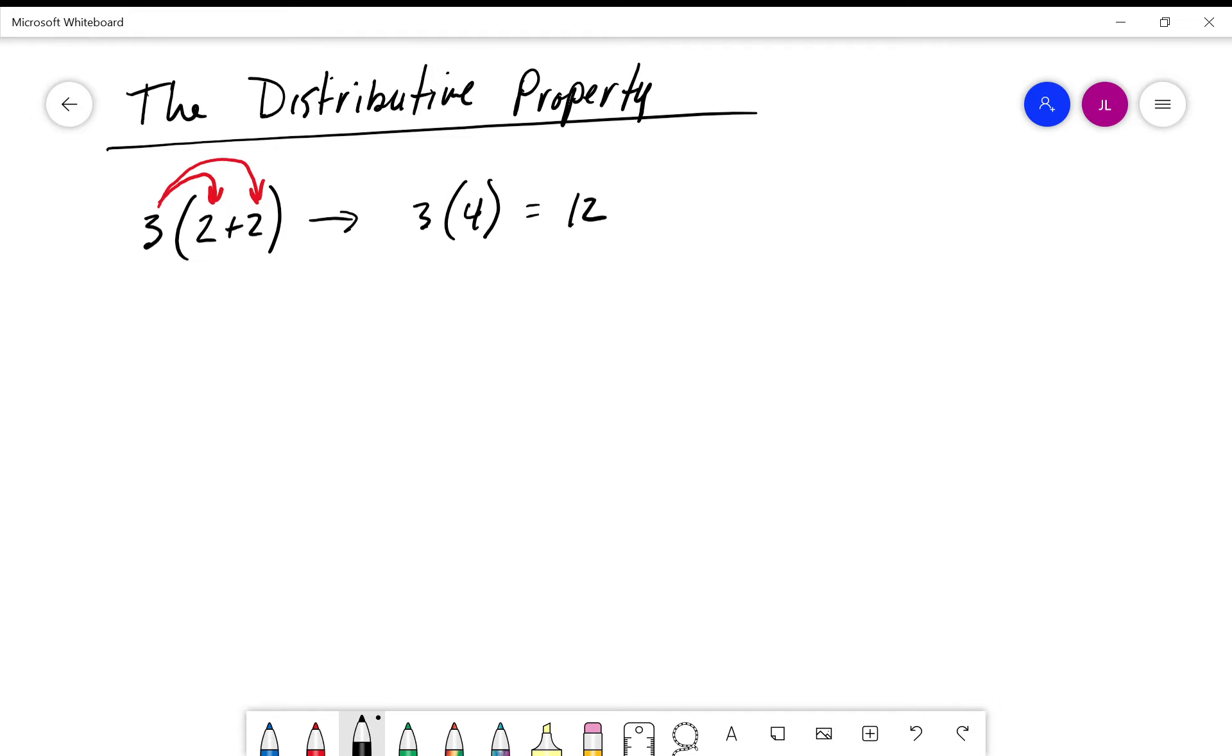The distributive property says we can multiply what's outside the parentheses by everything inside them. This means we have 3 times 2 plus 3 times 2, which is 6 plus 6, equal to 12. So we're essentially distributing this 3 throughout everything in the parentheses through multiplication.